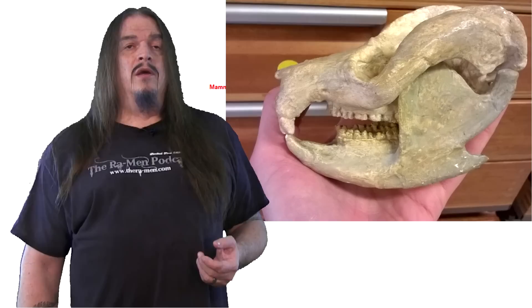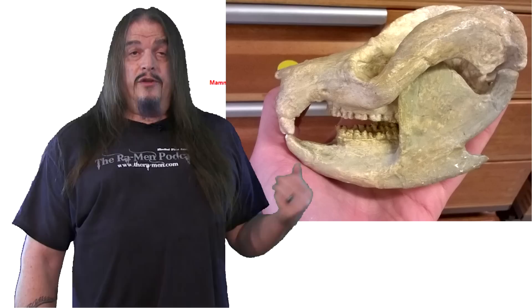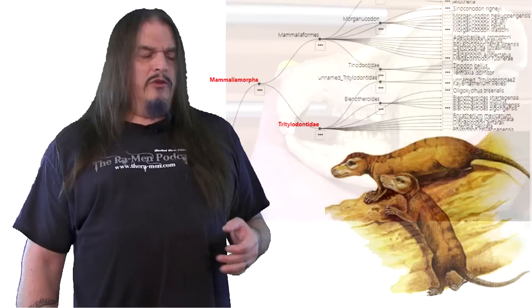Instead, they just had incisors that were more like that of rodents. And the name Tritilodont refers to the three rows of cusps in their cheek teeth, perfect for grinding plants. Their grinding teeth were a bit tougher than ours too, having up to six roots each.